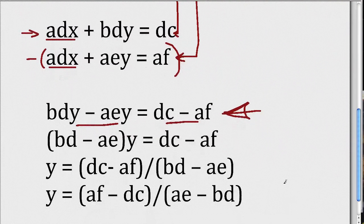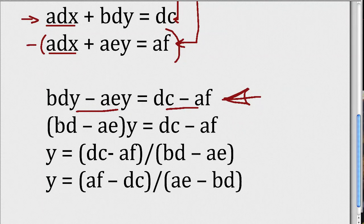Now finally what I do is solve for Y, and I solve for Y by dividing both sides of this expression by the quantity here that's in parentheses. So I divide both sides of this equation by the quantity BD minus AE. And when I do that, I have this equation for Y. I have Y is equal to, in the numerator, in parentheses, DC minus AF, and then in the denominator, divided by BD minus AE. So this is the solution for Y.